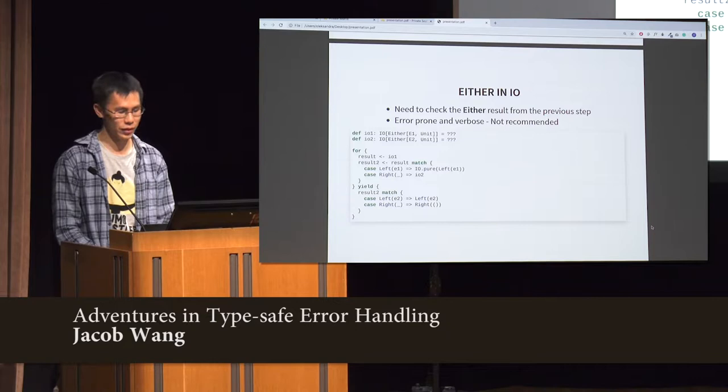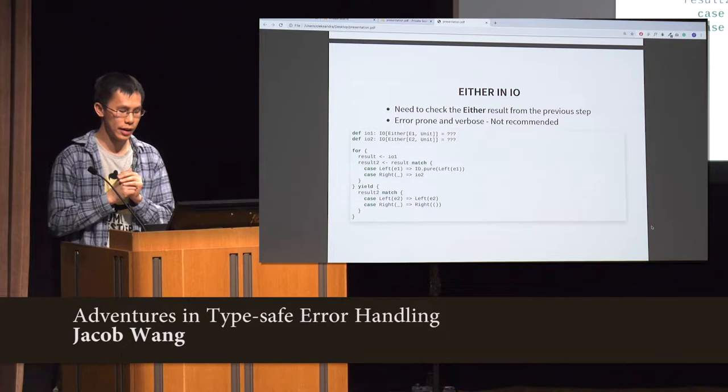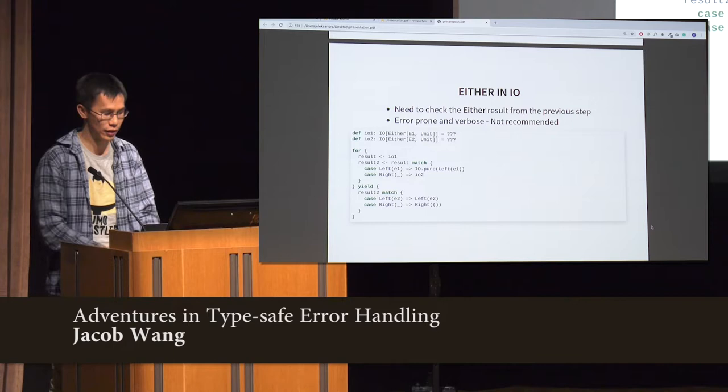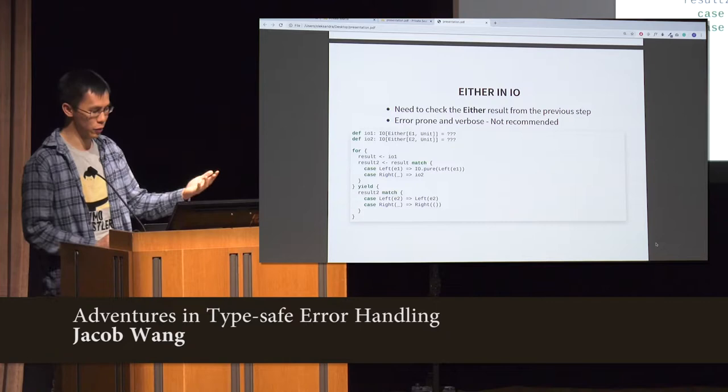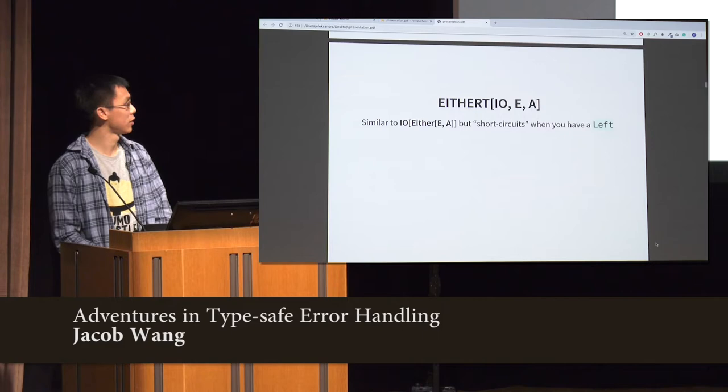Not the nicest. So what people started doing is putting Either inside IO. And it works, kind of. So you have IO of Either inside IO. But the problem with that is when you're using flatMap on IO, you get the Either out and then you have to do the checking on it — the pattern match — and then fail fast if it failed, or keep going with the next step if it succeeded. Normally you write about three steps of these things before you give up and try to find a better solution.